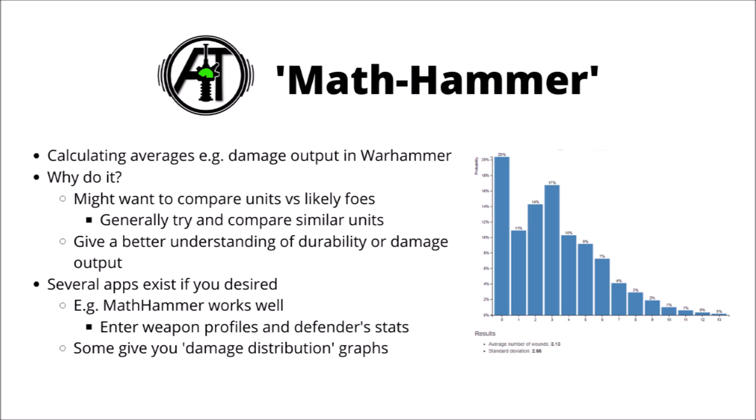Other apps exist where you can get damage distribution curves, like the one you can see on the right, which for bigger more swingy weapons — say you have D6 shots or D6 damage — it can be quite helpful to actually see the curve as it drops off. This shows the percentage chance of the various wound outcomes from the shooting phase; for example, this weapon has a 20% chance of getting zero wounds, and various other chances all the way up to 12. Personally I find these just a little bit more info than you really need for the most part — I prefer just one number in my head, bearing in mind how swingy the weapon is likely to be.